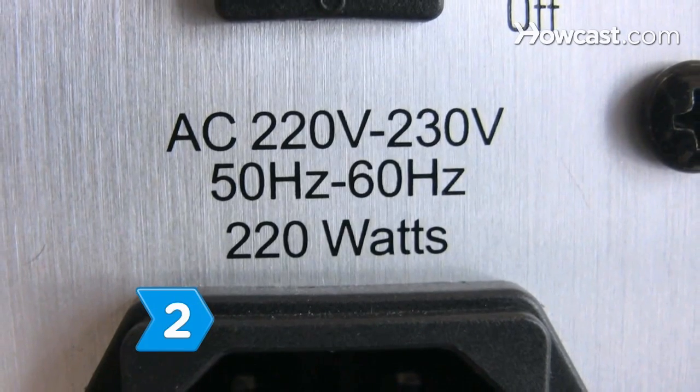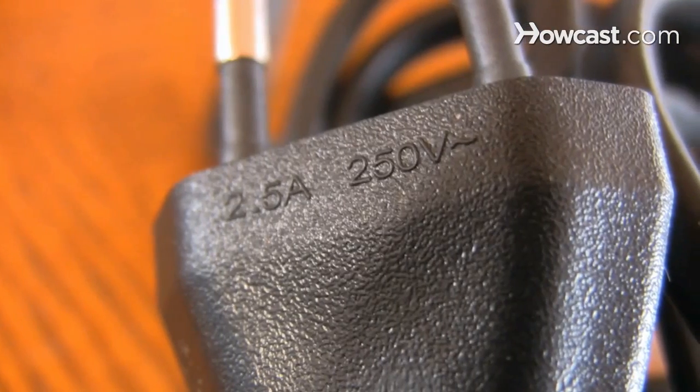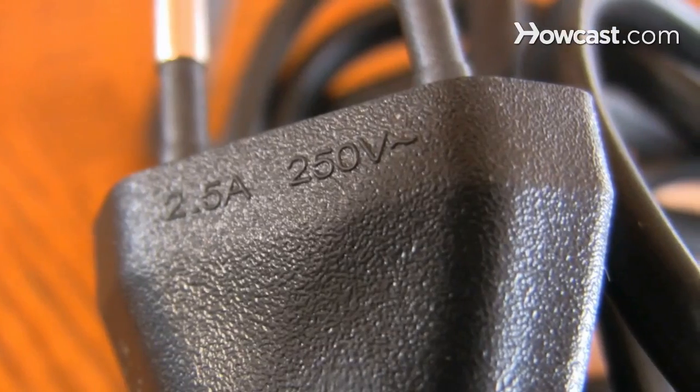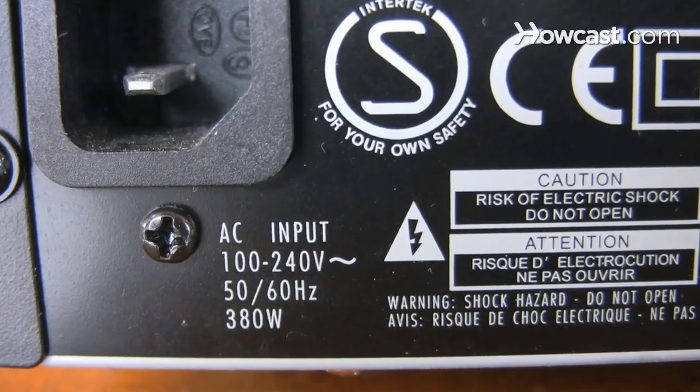Step 2. Understand that the wattage listed on an appliance is the maximum power it draws. Because many appliances have a range of settings, the actual amount of power consumed at any given time depends on the setting used.